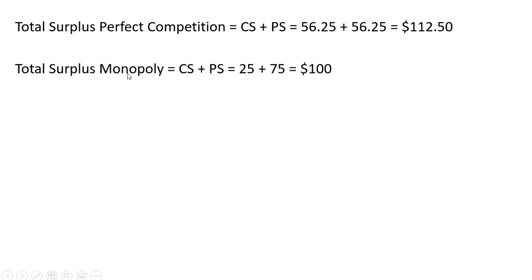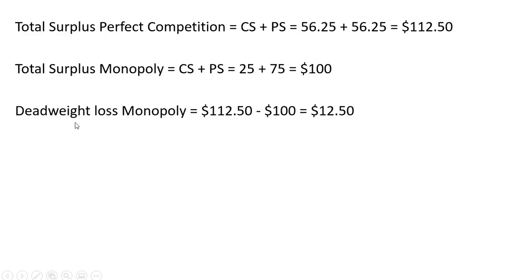Bringing everything together: total surplus under perfect competition is $112.50. Total surplus under monopoly is $25 consumer surplus plus $75 producer surplus equals $100. The deadweight loss is the difference between total surplus under perfect competition and monopoly, which is $12.50.